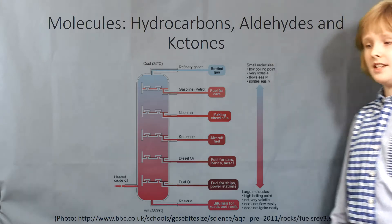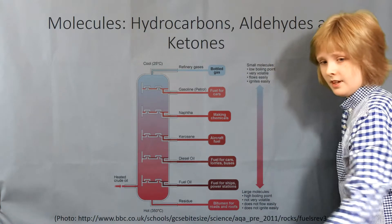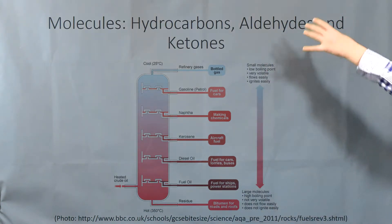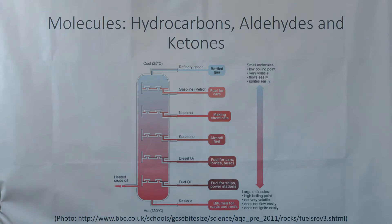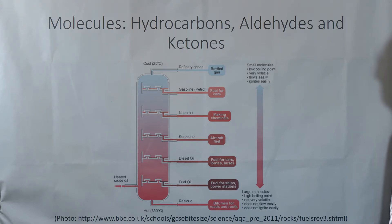This is the fractional distillation of petroleum, also known as crude oil. You can see that when crude oil is heated, it goes up a special chamber and gets fractionated into fractions such as gasoline, naphtha, kerosene, diesel, and so on.